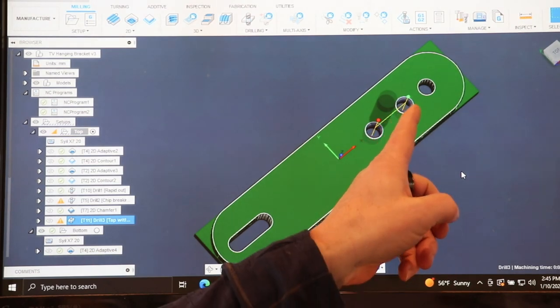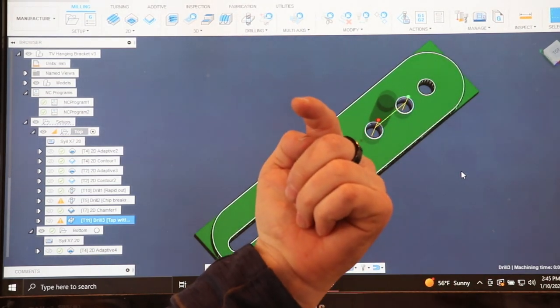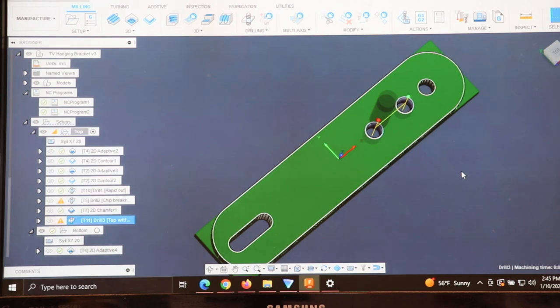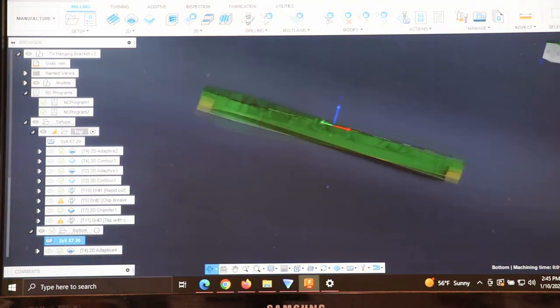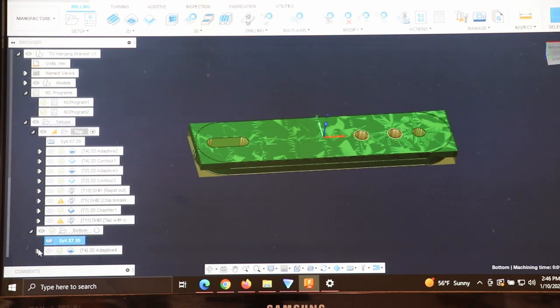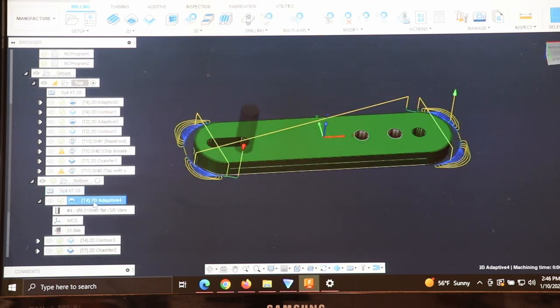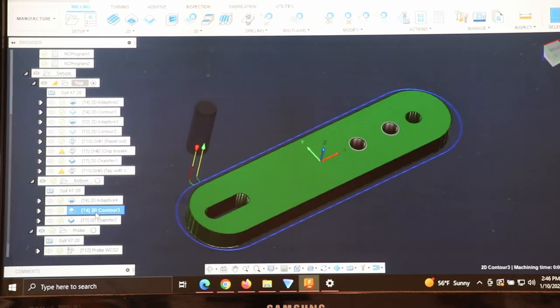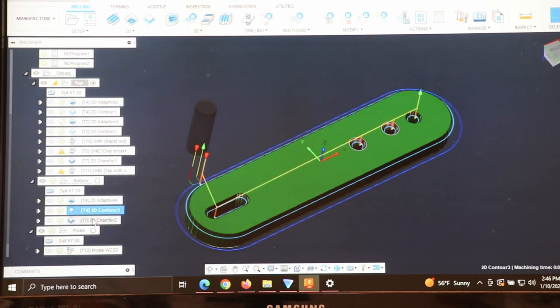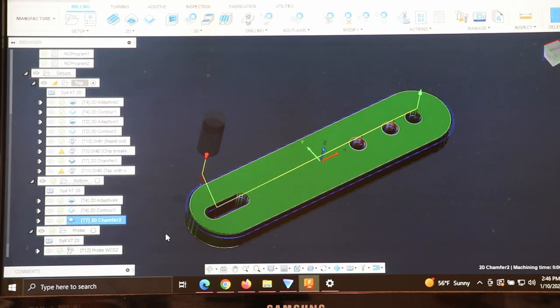I'll do a chamfer on everything and then tap these two holes. These two holes from the backside will drill into that French cleat. Let's flip this to this side. And we've got a 2D adaptive to finish up that contour, followed by the contour to get to my final depth, followed by a chamfer. So it's a pretty simple bracket, pretty simple toolpaths. Let's go see it in action.